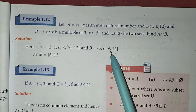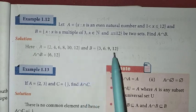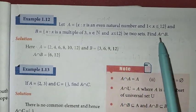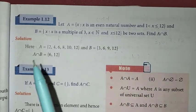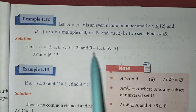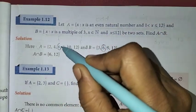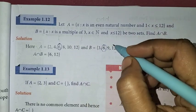So the multiples of 3 up to 12 are 3, 6, 9, 12. Therefore, set B equals {3, 6, 9, 12}.